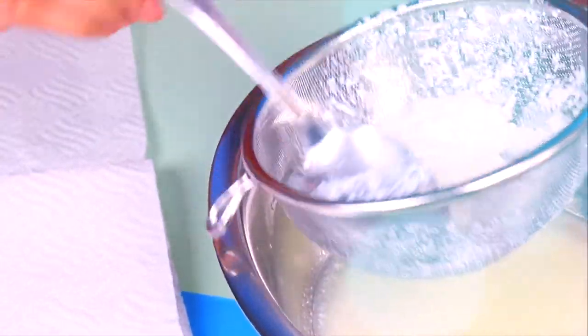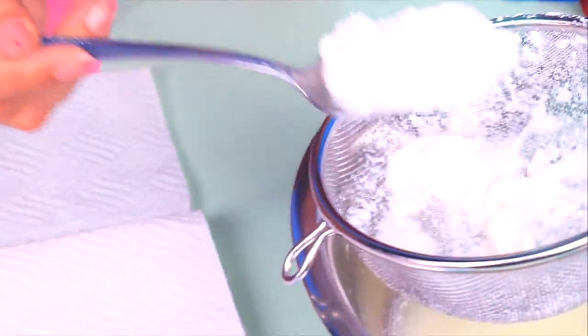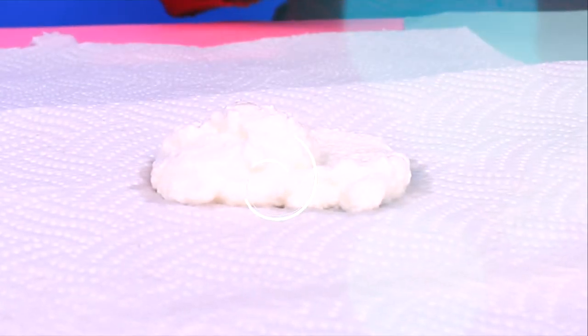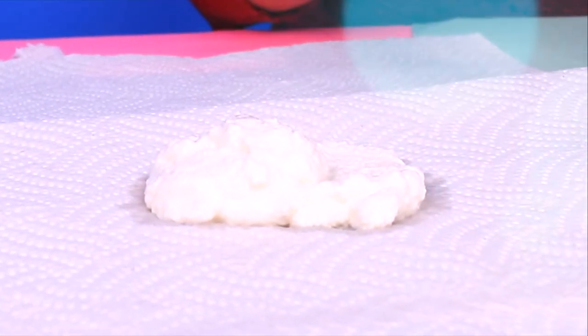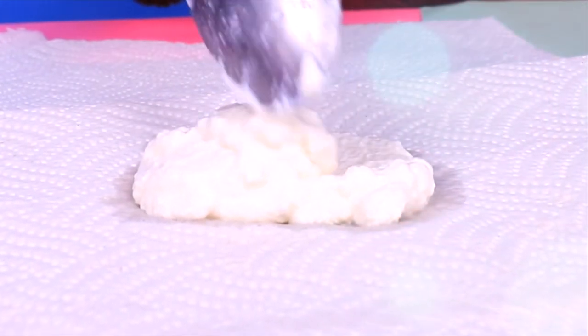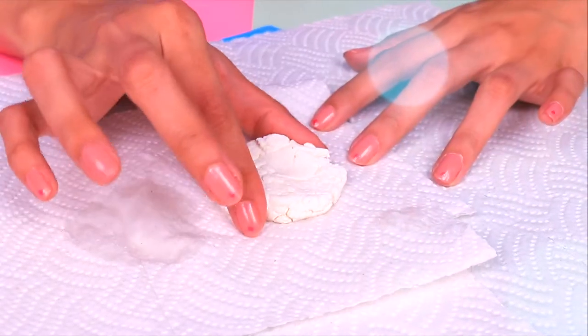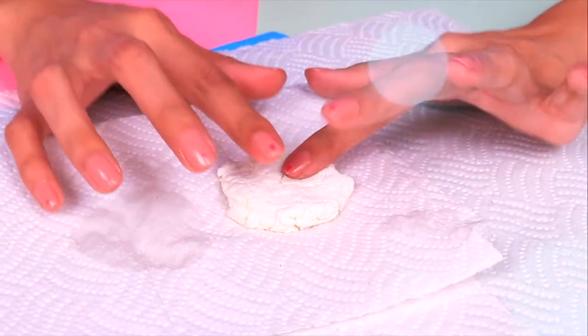Now that we have it ready, we will pour our mix on a paper towel so it absorbs all the water left. It looks a little bit like a watery cottage cheese so we will continue to try making it dry. We will fold the paper towel a few times so it absorbs the water left on the top. And it's basically dry so now we can use it as we would normally use clay.